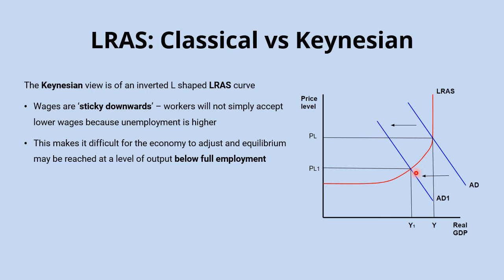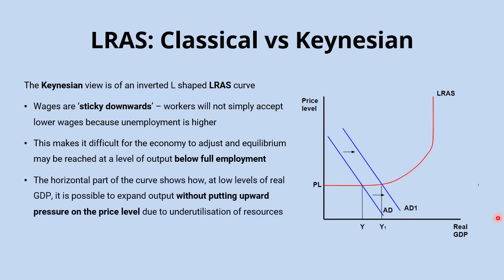If we bring aggregate demand down to a very low level, we can also explain the horizontal part of the curve. When output is so low, resources are underutilized and it's possible to expand output without putting upward pressure on the price level — aggregate demand can shift to the right and the price level doesn't increase. But as greater scarcity kicks in, expanding output further becomes more difficult, the curve becomes upward sloping, and the traditional trade-off between growing real GDP and keeping inflation under control returns.